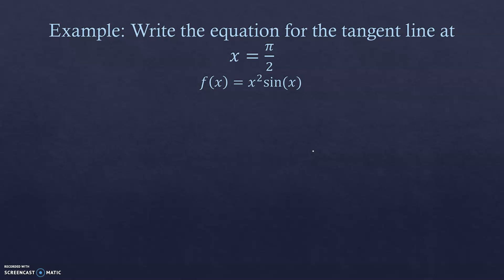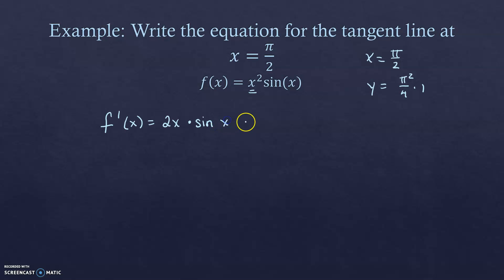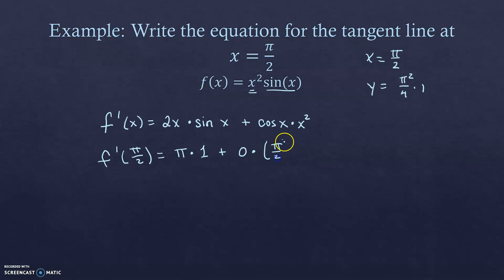Next example: find the equation of the tangent line at x = π/2 for f(x) = x²·sin(x). We need an x-coordinate (π/2), a y-coordinate f(π/2) = π²/4 · 1 = π²/4, and a slope from f′. Using the product rule: f′(x) = 2x·sin(x) + x²·cos(x). Plugging in π/2: 2·(π/2)·1 + (π/2)²·0 = π. So the slope is π.